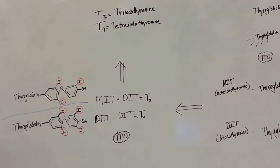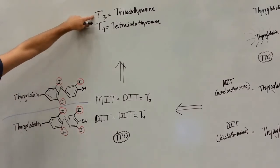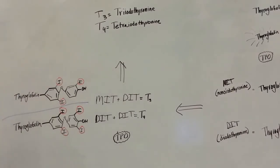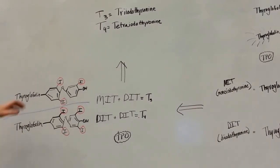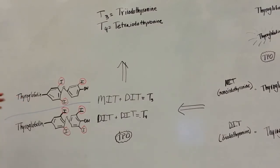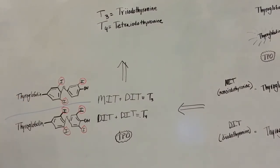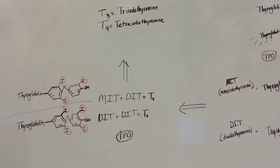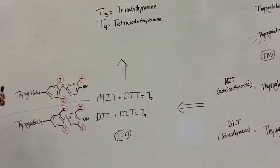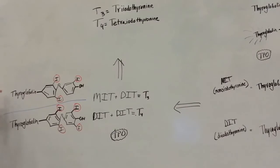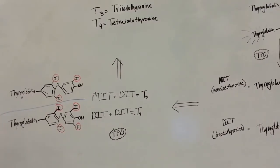Also, T4 and T3 can be inactivated. If you remove an iodine from T3, you can convert it to an inactive T2 form, and that doesn't affect the intracellular nuclear transcription. Likewise, if you have a reverse T3, that is also going to be inactivated.